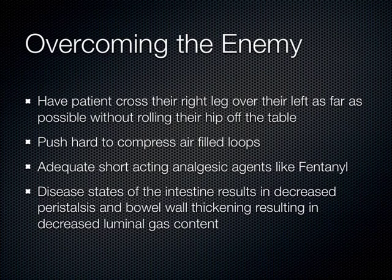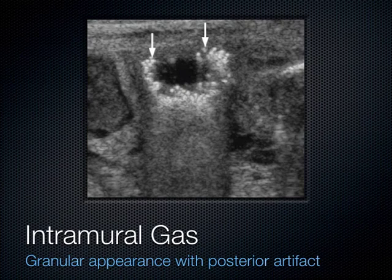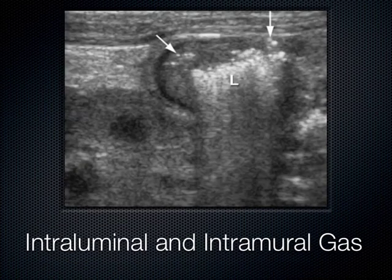Gas inside the wall of the bowel — intramural gas — is always abnormal. It tells us infection has progressed far enough to produce gas within the wall itself. Intraluminal gas — gas inside the lumen of the bowel — is normal. This image shows the contrast: intramural gas on one side, which is always abnormal, versus intraluminal gas, which we expect to see.